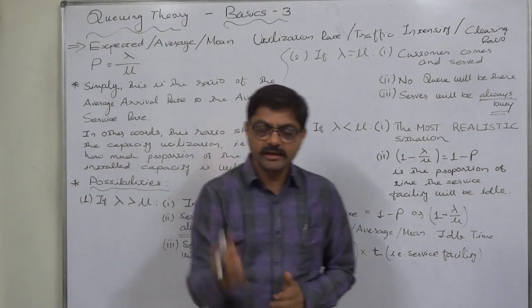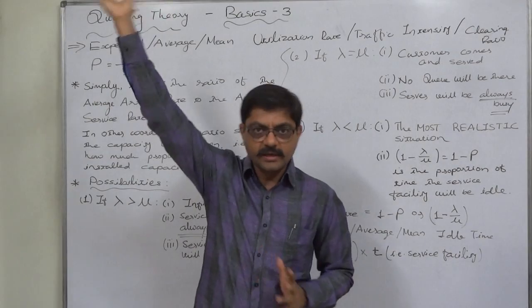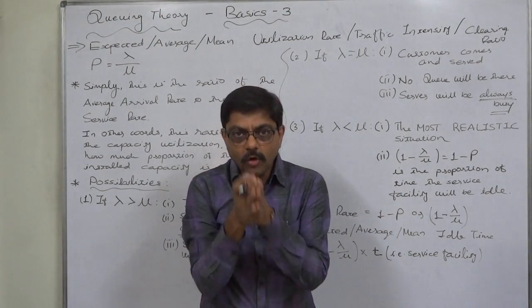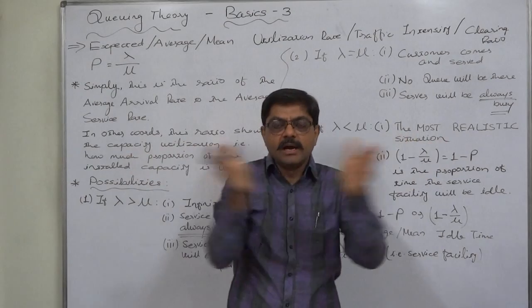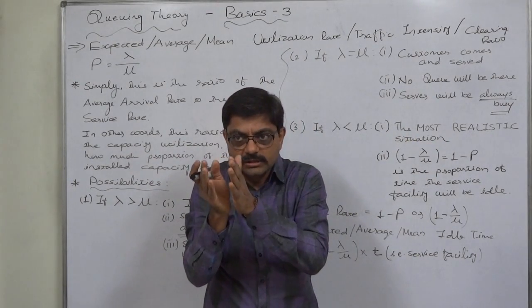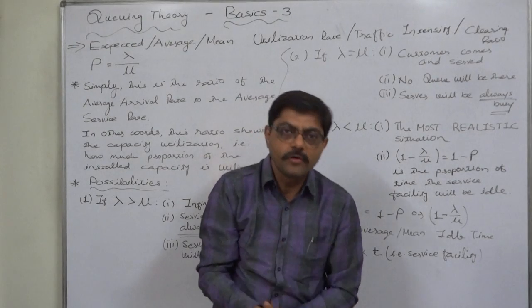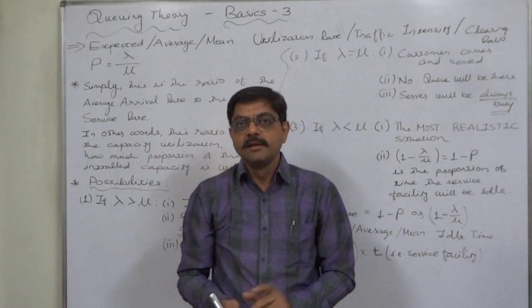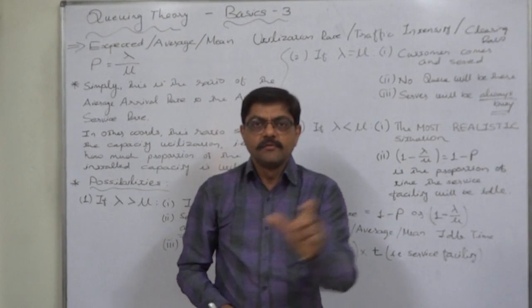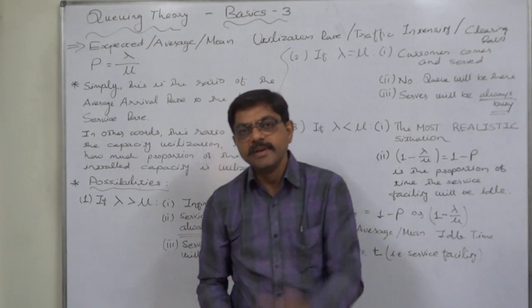Refer to the first lecture of basics. So what happens? In one hour the cashier or the server is actually busy for 12 times 4, 48 minutes. That means in between for 12 minutes he or she will be idle.